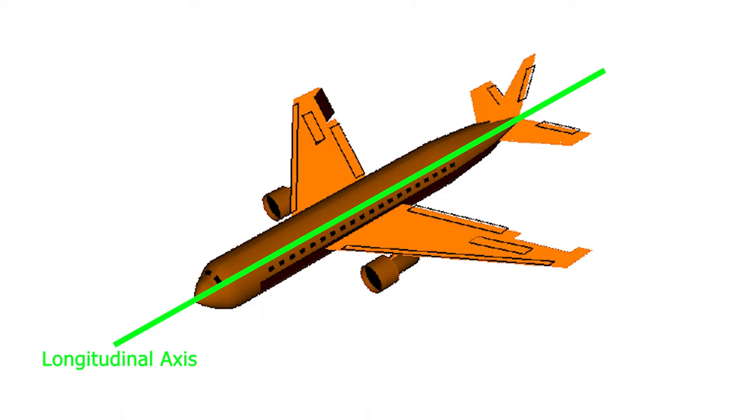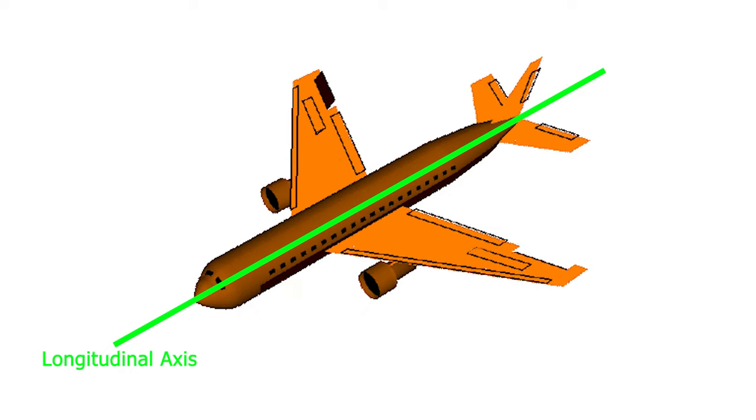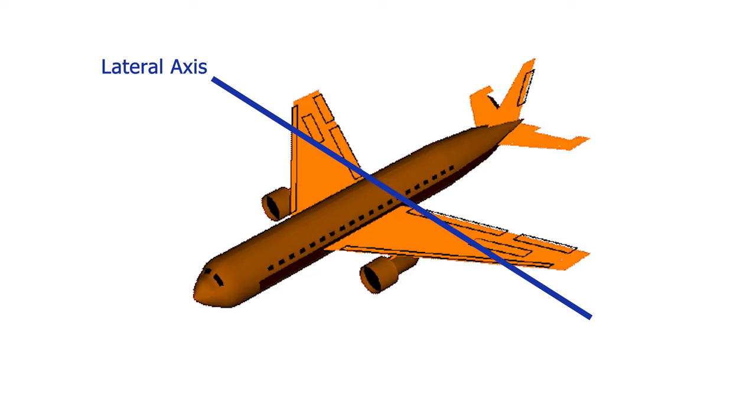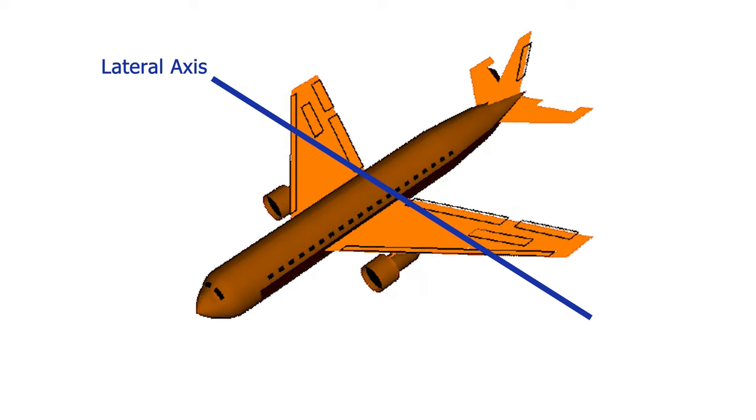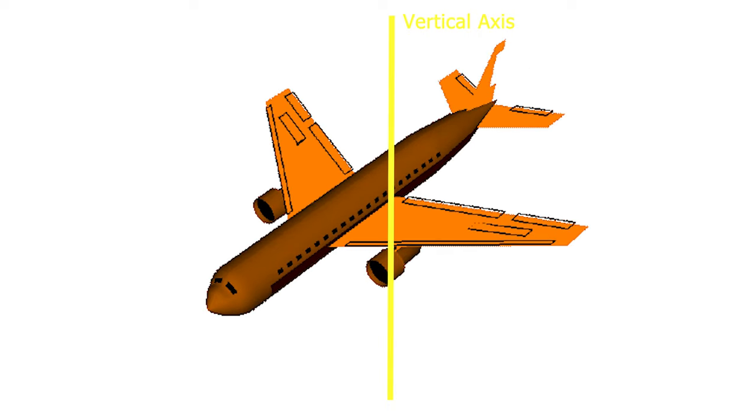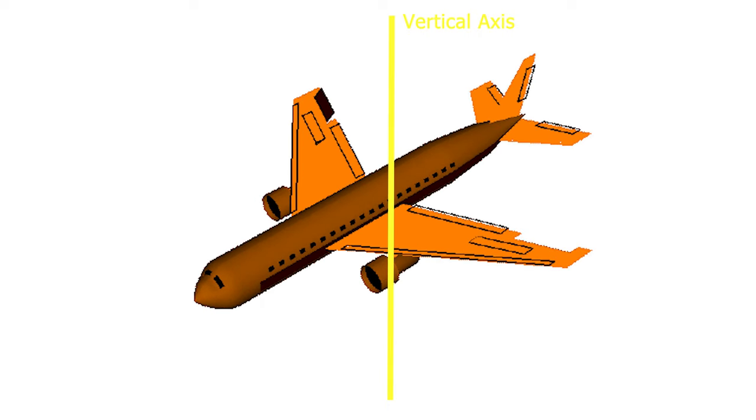The first axis is the longitudinal axis. It extends through the aircraft's fuselage or main body from the nose to the tail. The second one is the lateral axis. By lateral, we mean from side to side. So imagine you are sitting on an airplane. The lateral axis goes through the airplane's center of gravity from one wing to another. The final third axis is the vertical axis. This axis passes through the center of gravity in a vertical direction.